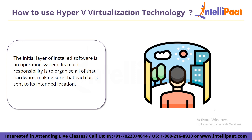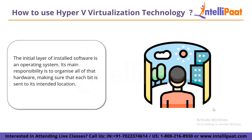We will start with the well-known computer, beginning with the hardware — constructed of the motherboard, processor, RAM, hard drive and display. The initial layer of installed software is an operating system. Its main responsibility is to organize all of that hardware, making sure that each bit is sent to its intended location. Its roles include receiving inputs from devices like keyboard and mouse, and directing output to the screen, printers and other devices.